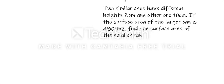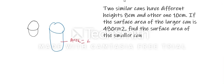In this video we shall discuss a question from similar areas. Here we have two similar cans. The larger can has an area of 480 centimeters squared. The smaller can has a height of 8 centimeters, with no area given. The larger can has a height of 10 centimeters.